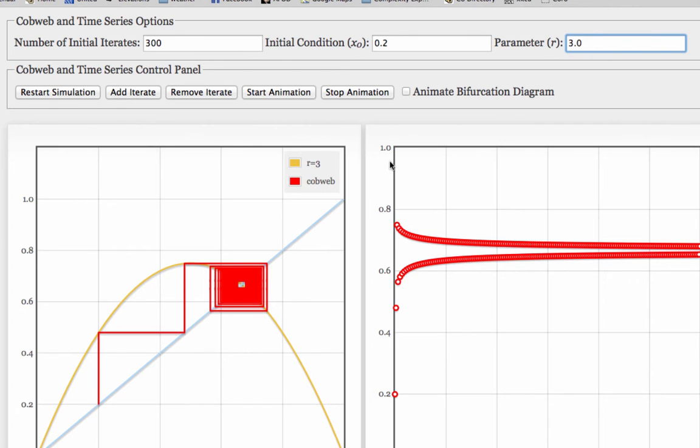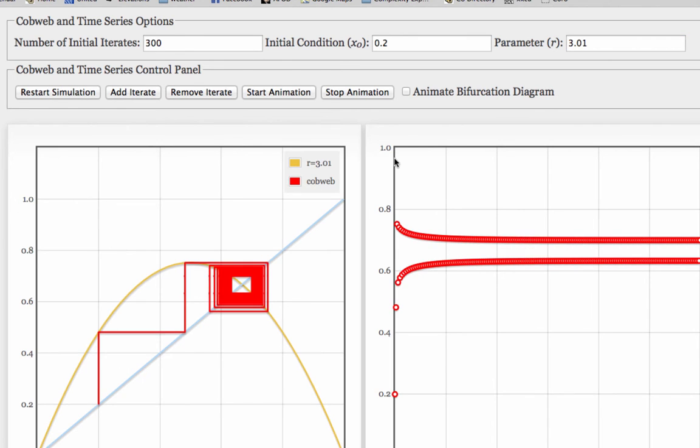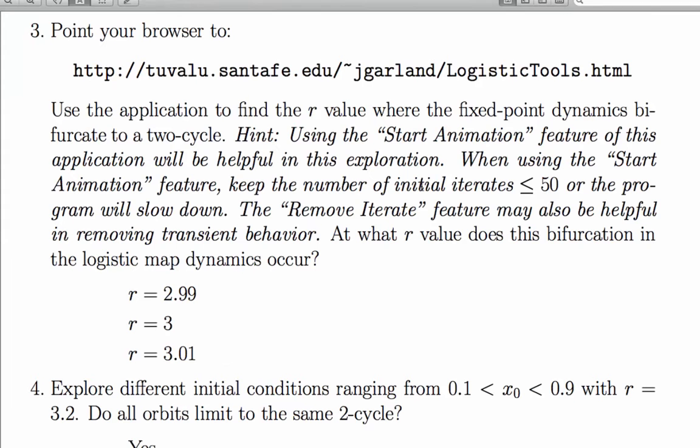Let's try slightly higher than 3. Aha! So there's definitely a fixed point below 3, and there's definitely a 2-cycle above 3. So I would say that the bifurcation occurred right at 3, which would suggest that the second answer is the right one.